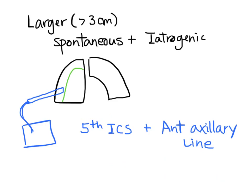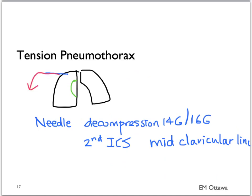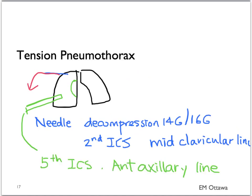What about a tension pneumothorax when the patient is unstable? First, we want to release the air quickly since putting in a chest tube takes time. We perform needle decompression with a large-bore IV needle, inserting it into the 2nd intercostal space in the mid-clavicular line. As the needle enters the space, you should hear a gush of air. This decompresses the tension pneumothorax and converts it into a simple pneumothorax, giving you time to then insert a chest tube in the 5th intercostal space, anterior axillary line. After needle decompression, the patient's hemodynamic status should improve.